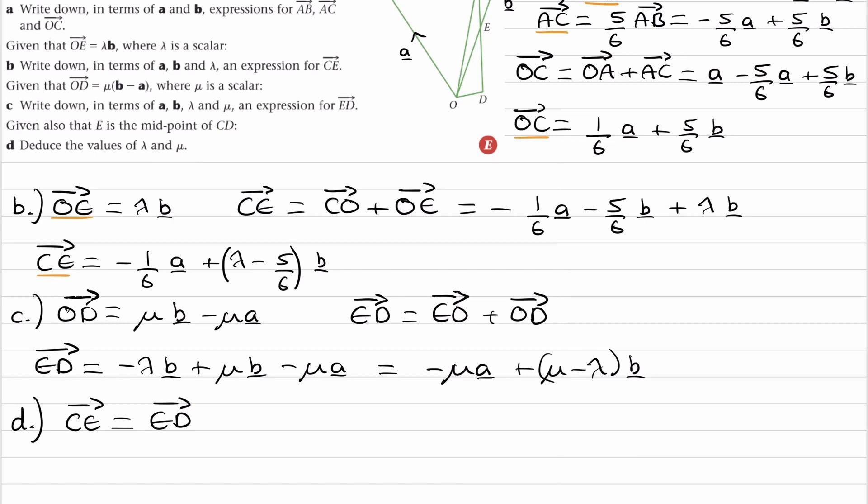Okay, so we have CE from earlier. We have ED over here. So we can equate those two things. We know they must be equal, and then we can rearrange for, or we can solve simultaneously for mu and lambda.